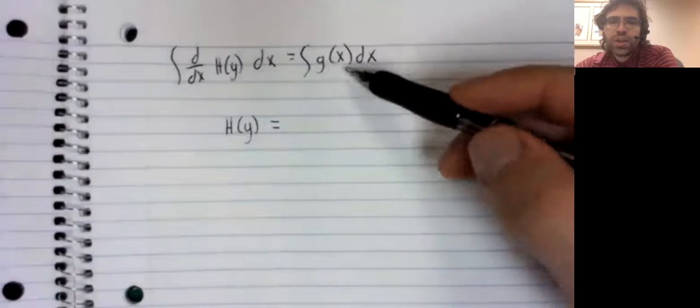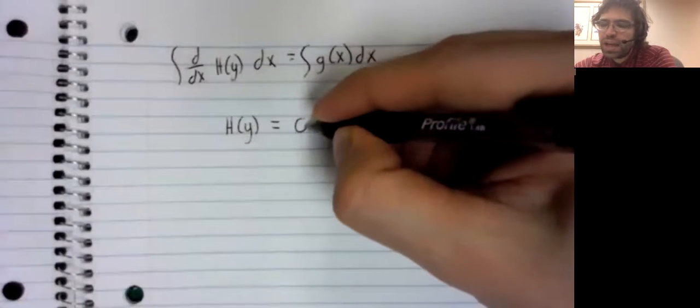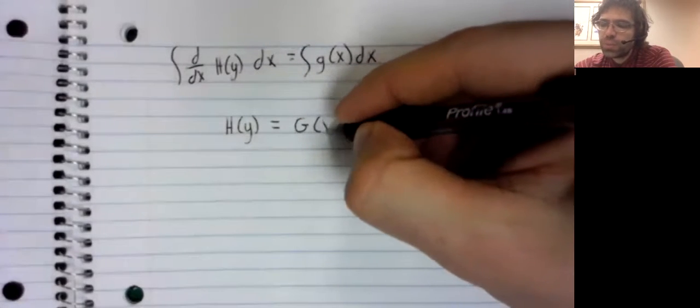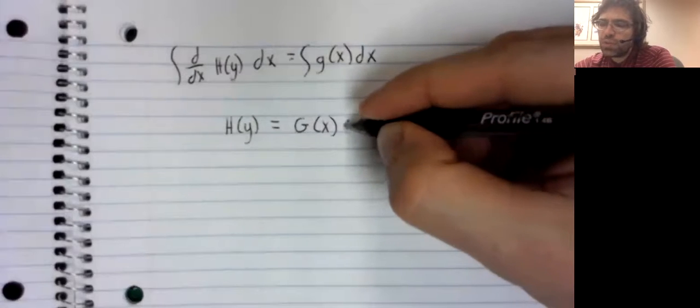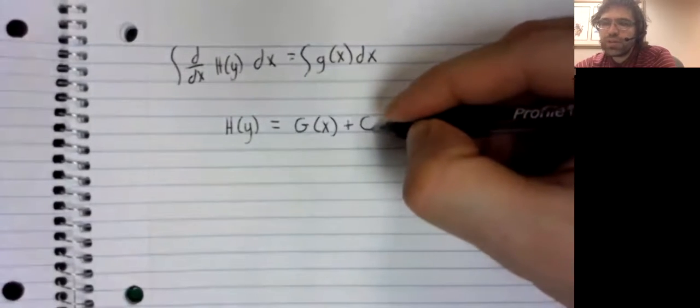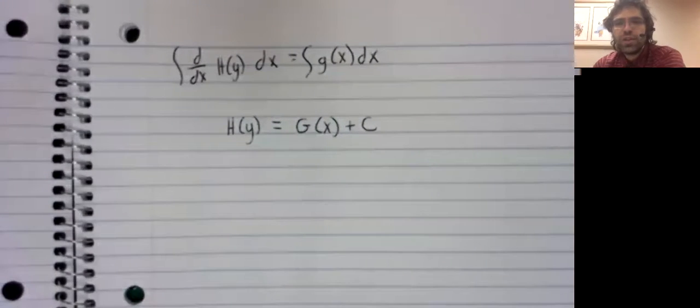Here we need an anti-derivative. We've used capital H, so we'll use capital G. We've got our constant of integration.